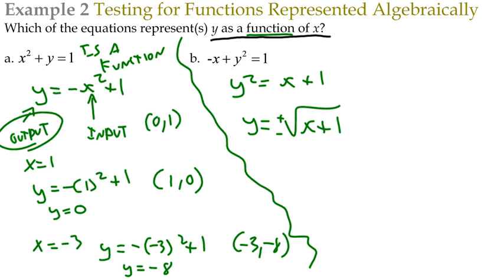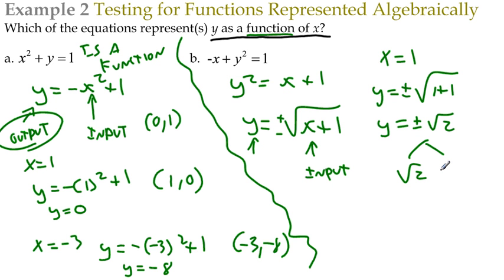Remember back from algebra, anytime you take the square root, you have to put plus or minus. If I plug in any number for x, how many y values are we going to get? Let's try 1. y equals plus or minus the square root of 1 plus 1. That means y equals plus or minus the square root of 2. What does plus or minus mean? That means one's positive root 2 and one's negative root 2.